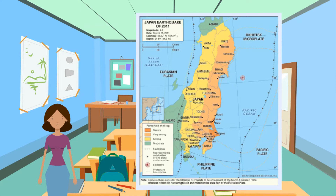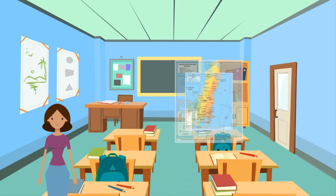A huge tsunami followed the earthquake, devastating the east coast of Japan — notably the nuclear meltdown in Fukushima. Japan is a developed country with a GDP of 4.97 trillion US dollars in 2018.